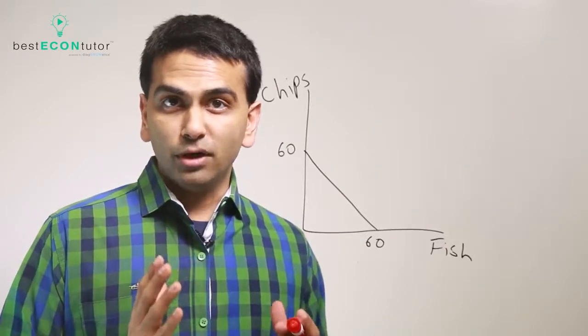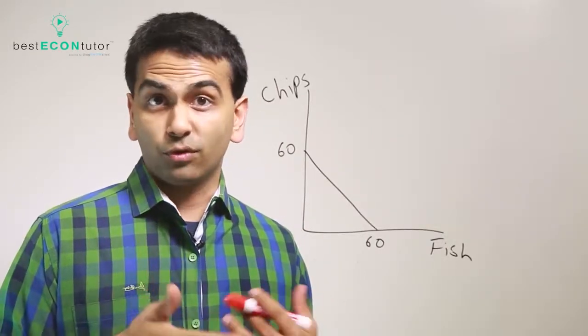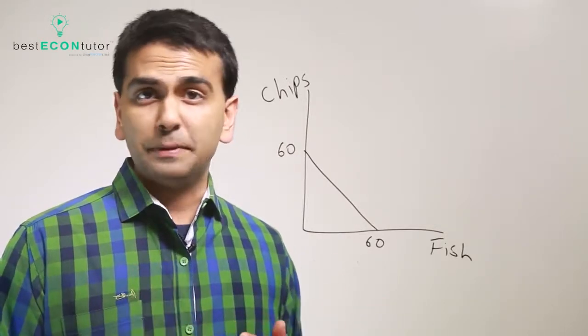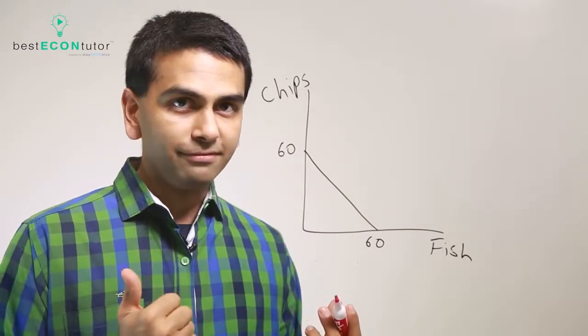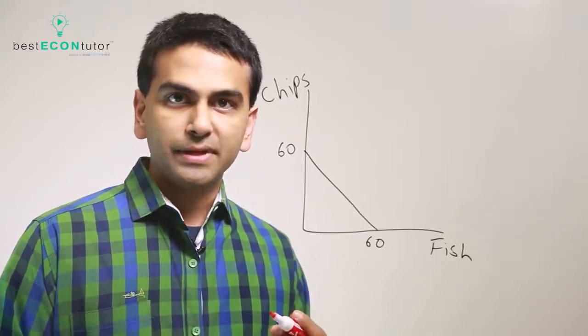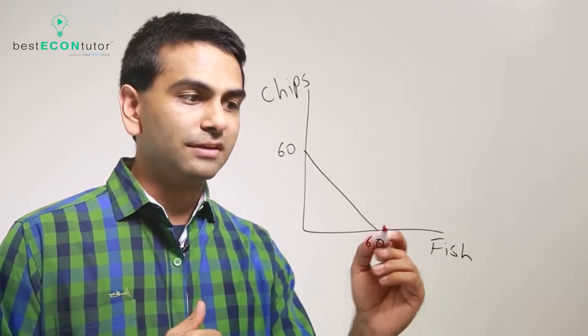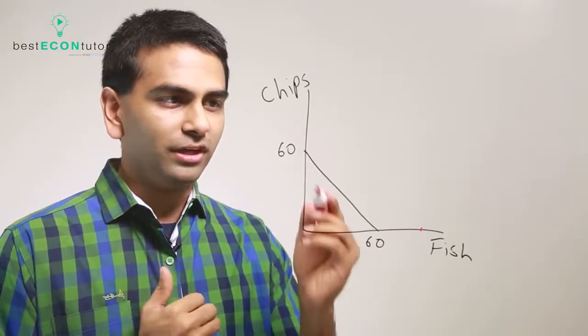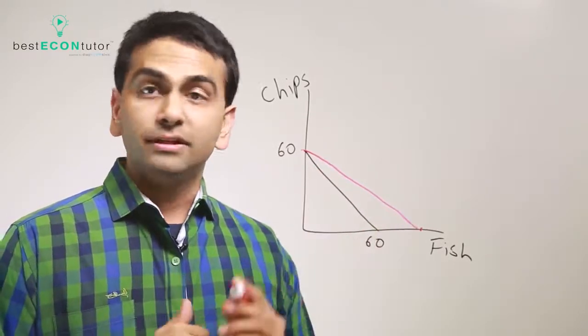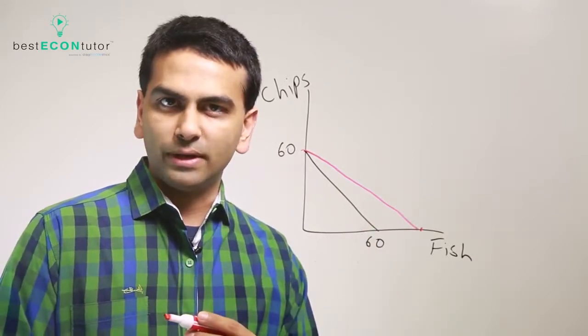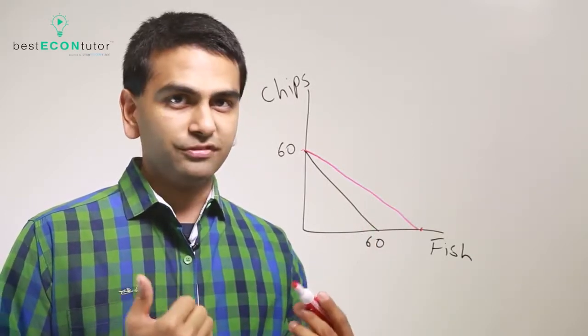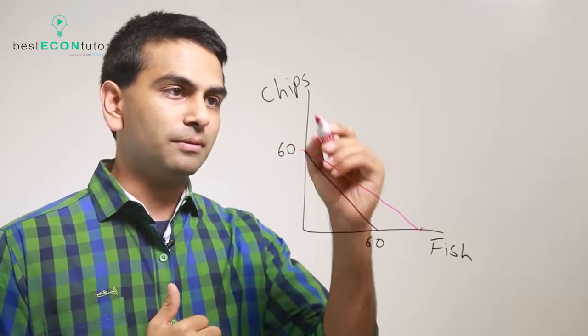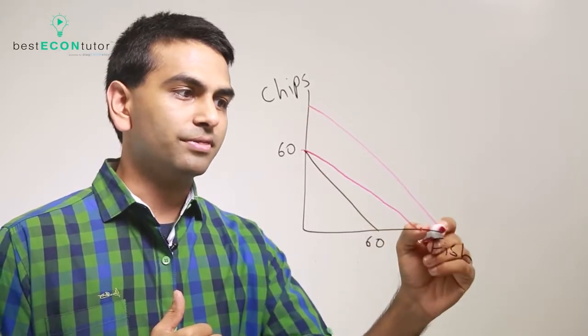Now suppose that the production technologies for one of your goods has improved. Suppose that you can make either fish and chips and you found a much better way to catch fish. Well now your PPF will actually shift a little bit. Now if you're better at making fish instead of 60 you can make more fish. But since your technology for chips hasn't really changed you can still only make 60 chips. So that's why your PPF will kind of shift out in this way. Now of course if you had a technological improvement that helped you make more of both fish and chips, then it would shift from this out to something like this where both intercepts go up.